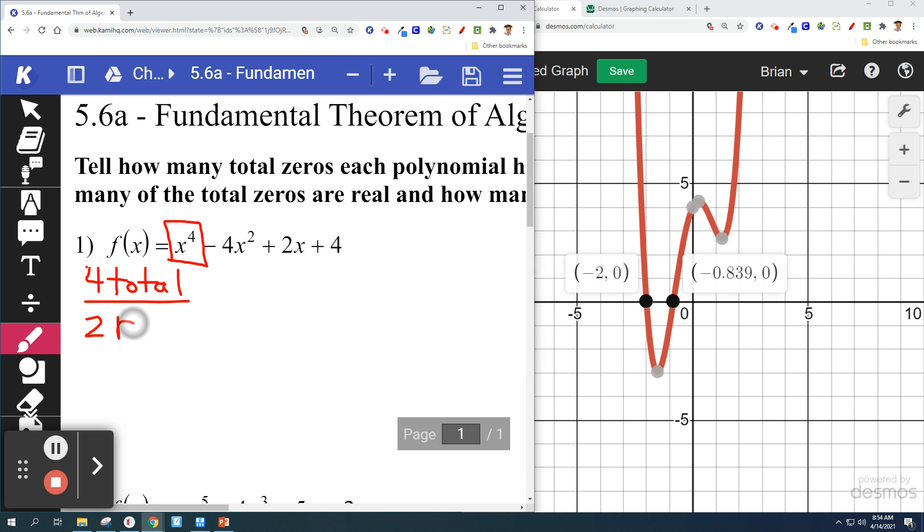There are 2 real zeros, and we can see that from the graph. 2 real, and that must mean that 2 of them are imaginary. So there are 4 total. 2 of those solutions are real numbers, and 2 of them are imaginary.